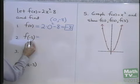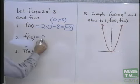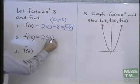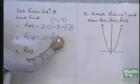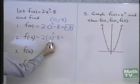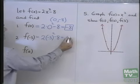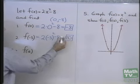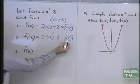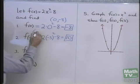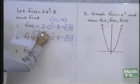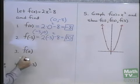When x is equal to negative 3, f(-3) is 2 times negative 3 squared minus 8. Negative 3 squared is 9, times 2 is 18, subtract 8 is 10. So when x is equal to negative 3, y is equal to 10. That means that the ordered pair (-3, 10) belongs to this function.